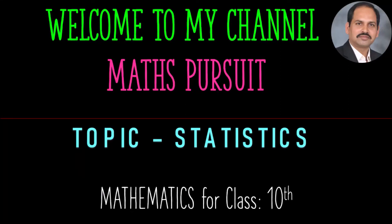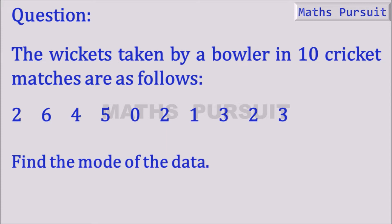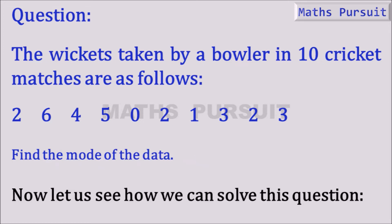Welcome to my channel Maths Pursuit. Today under the topic statistics, let us see what exactly we have in the question. Moving on to the question, it is given that the wickets taken by a bowler in 10 cricket matches are as follows. Find the mode of the data. Now let us see how we can solve this question.